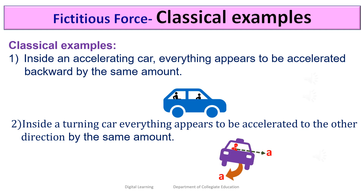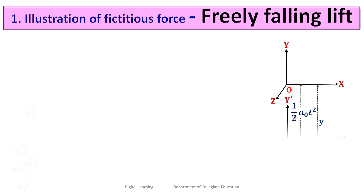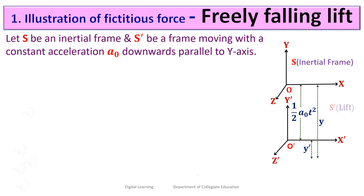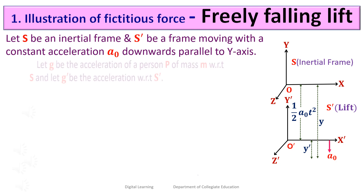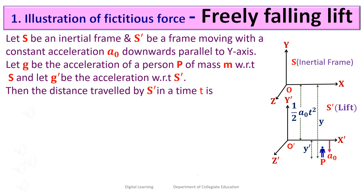Let us consider an illustration of fictitious force such as a freely falling lift. Let S be an inertial frame and S' be a frame moving with a constant acceleration A0 downwards parallel to the y-axis — essentially a lift. Let g be the acceleration of a person P of mass m with respect to S, and g' be the acceleration with respect to S', i.e., with respect to the lift. Then the distance travelled by S' in time t is given by OO' = ½ A0 t². From the figure, y = OO' + y' = ½ A0 t² + y'.